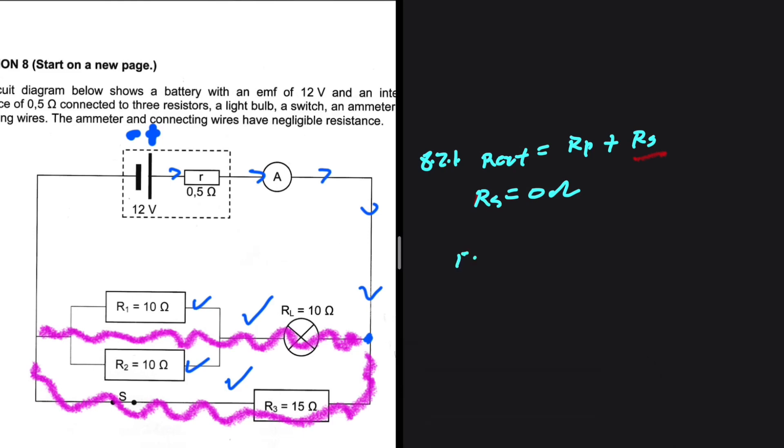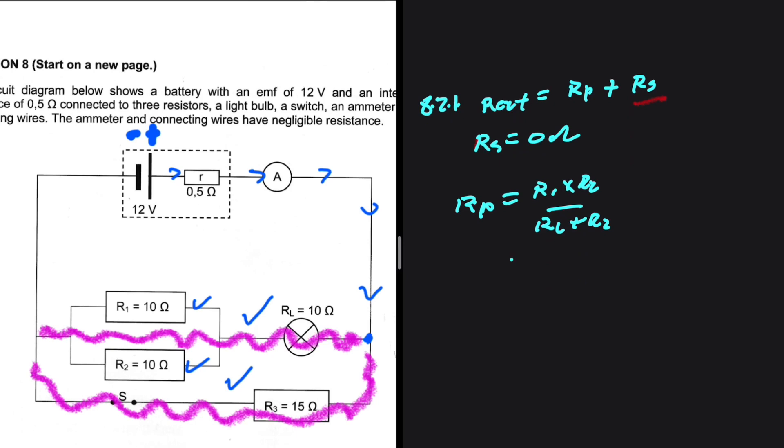So R_P will equal R1 multiplied by R2 divided by R1 plus R2. So we have 10 multiplied by 10, 100 divided by 10 plus 10, 20. 100 divided by 20 is 5 ohms. So the effective resistance of these two resistors is actually 5 ohms.